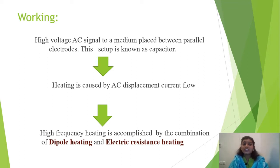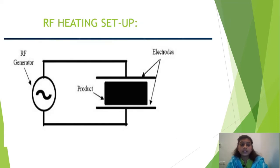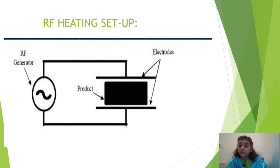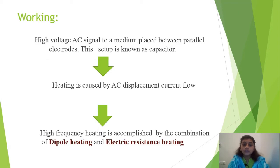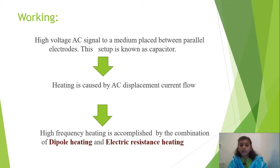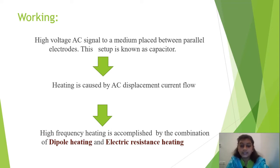The heating is caused by AC displacement current flow — the current is supplied from the generator. Since there is already a capacitor, the energy is stored inside and the main concept is the electric energy converting to heat. High frequency heating is accomplished by the combination of dipole heating and electric resistance heating.